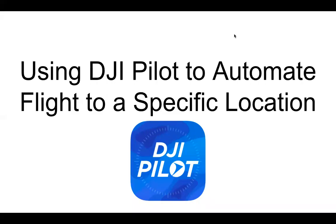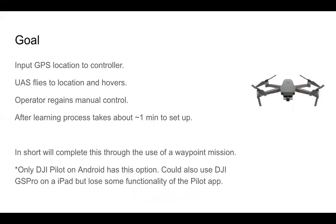Going over how to use DJI Pilot to automate flight to a specific location. The goal here is to input a GPS location to the controller, have the UAS fly to that location, then hover, and then regain manual control. After learning this process, it will take about a minute to set it up, and in short, this will be completed through the use of a Waypoint mission.